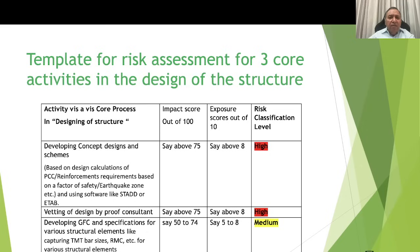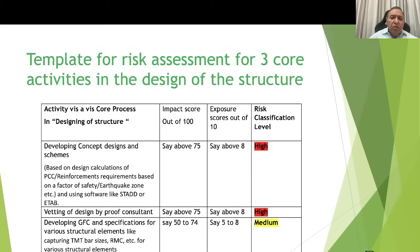This is the template for computing the risk score. The horizontal top line shows the activities for design of structure, impact score out of 100, exposure score out of 10, and the classification. The first activity is developing the concept design and scheme — based on designing calculations for PCC, reinforcement requirements, factor of safety, earthquake zone, etc., using software like STAAD or ETAP. Incorrect designing or failure to apply due diligence can lead to an impact score of 75 and exposure score of 8, classified as high risk. The second activity, vetting of the design by the proof consultant, is similarly assessed with an impact score of 75 and exposure score of 8, also classified as high risk.